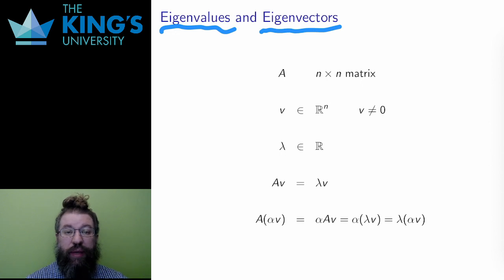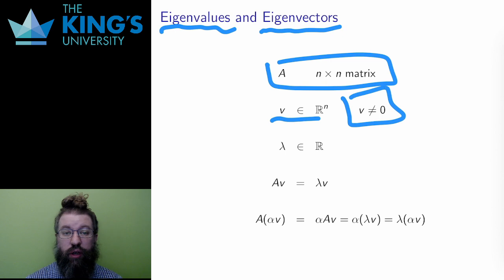To that end, I'll assume A is an n-by-n matrix, V is a non-zero vector in R^n, and lambda is a real number. So here is the definition.